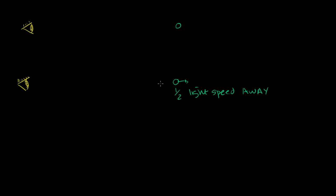Let's imagine what would happen. They're both emitting light, and they're both going to start emitting light at the exact same time. When they start emitting light, they're both at the exact same distance from my eye. The only difference is that the first source is stationary relative to me, while the second is moving away from me at half the speed of light.